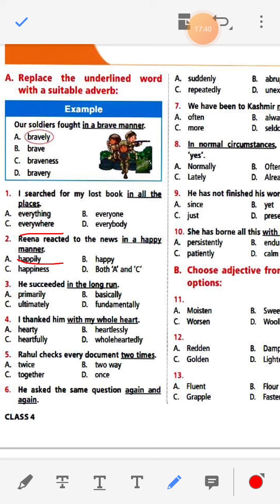Number eight: In normal circumstances, he would say yes. Options: normally, often, lately, already. The answer is 'normally'. Number nine: He has not finished his work by this time. Options: since, yet, just, present. The answer is 'yet' — He has not finished his work yet.